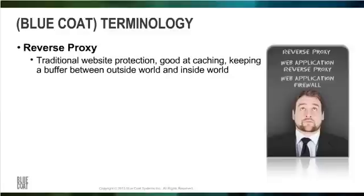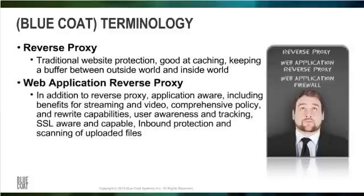Starting in SGOS 6.5, Bluecoat enhanced the reverse proxy security features of the proxy SG, introduced a subscription to Web Application Protection, and started referring to these capabilities under the name Web Application Reverse Proxy. Features included access to a geolocation database for reverse proxy and protection against SQL injection attacks. Bluecoat did not use the term Web Application Firewall at the time because they did not have a full WAF solution.